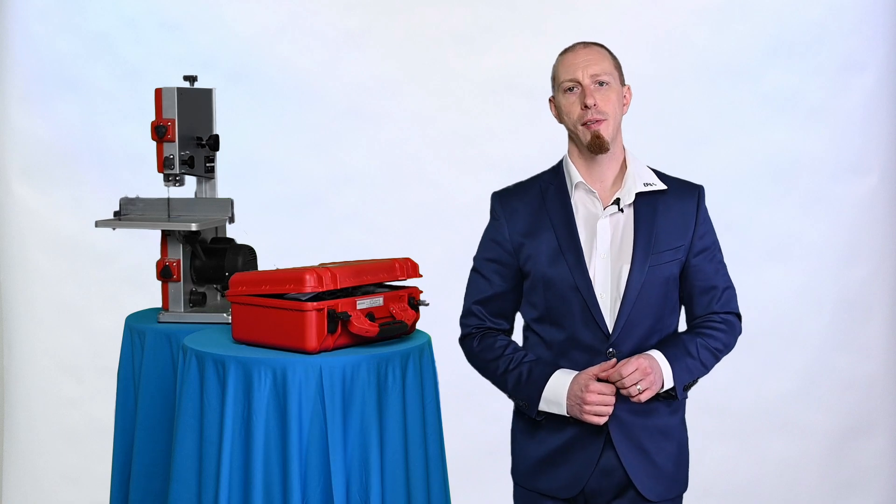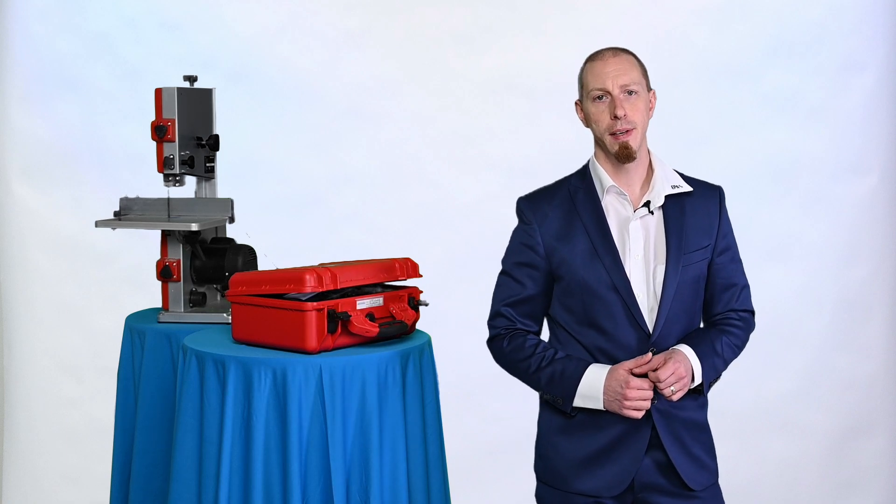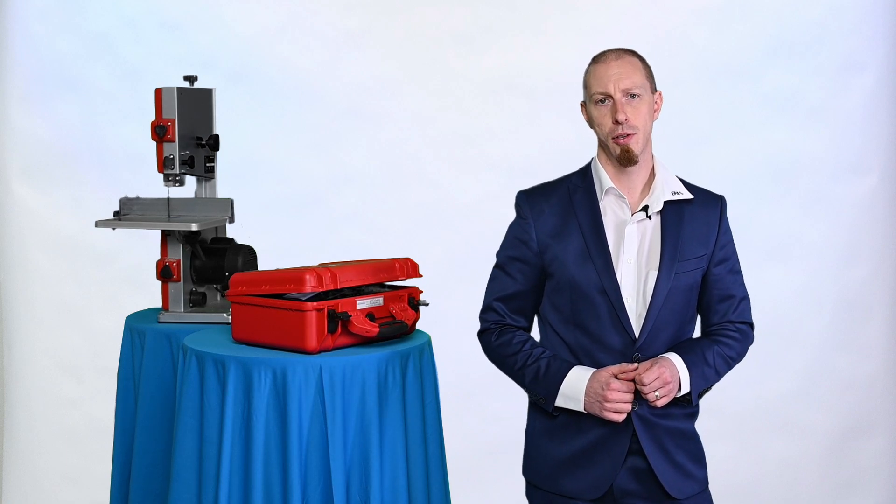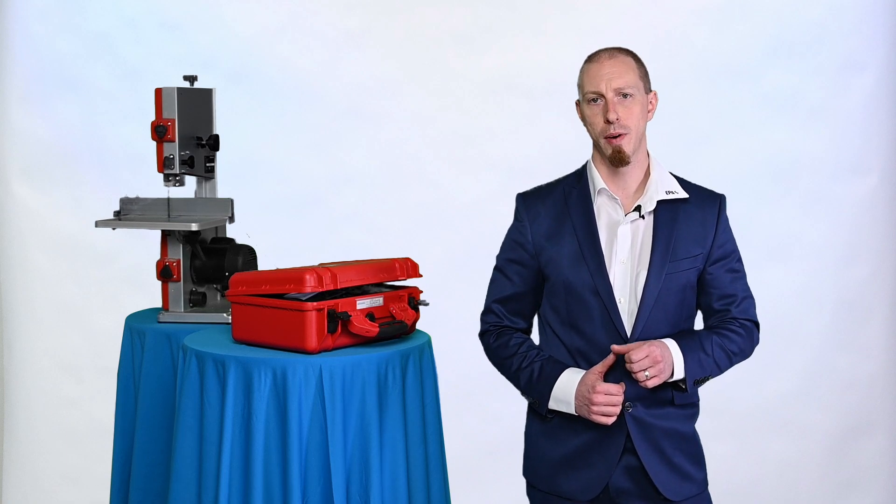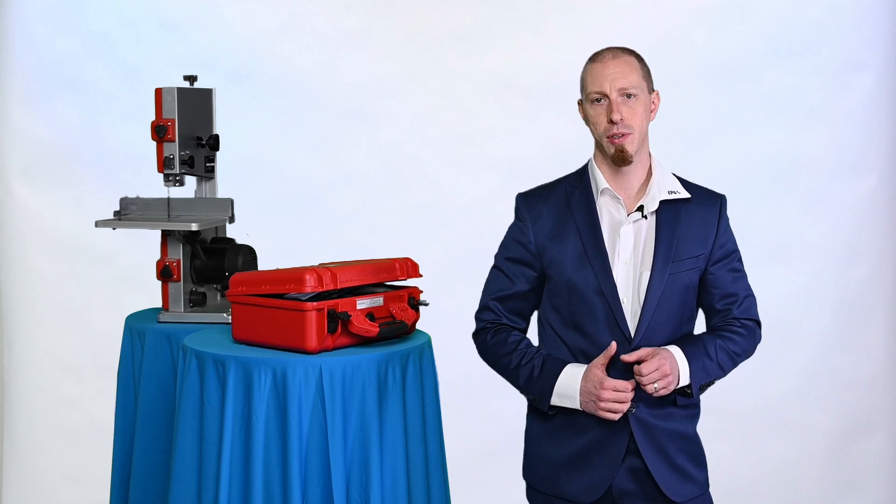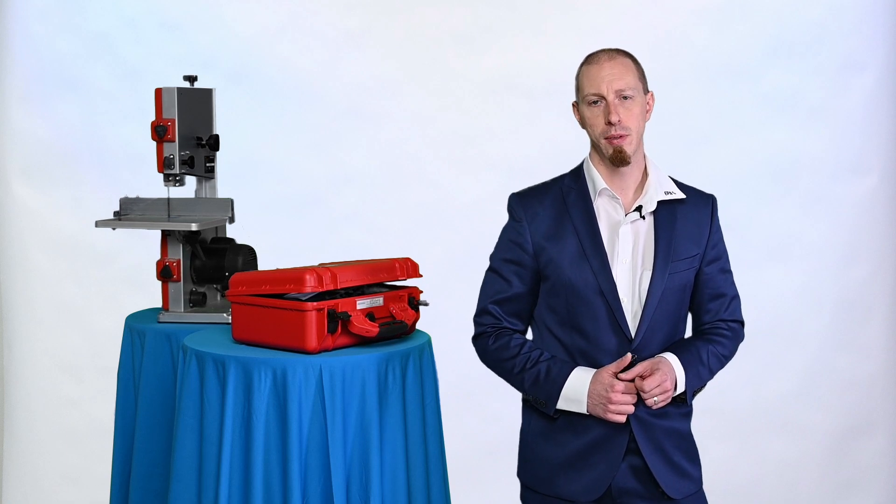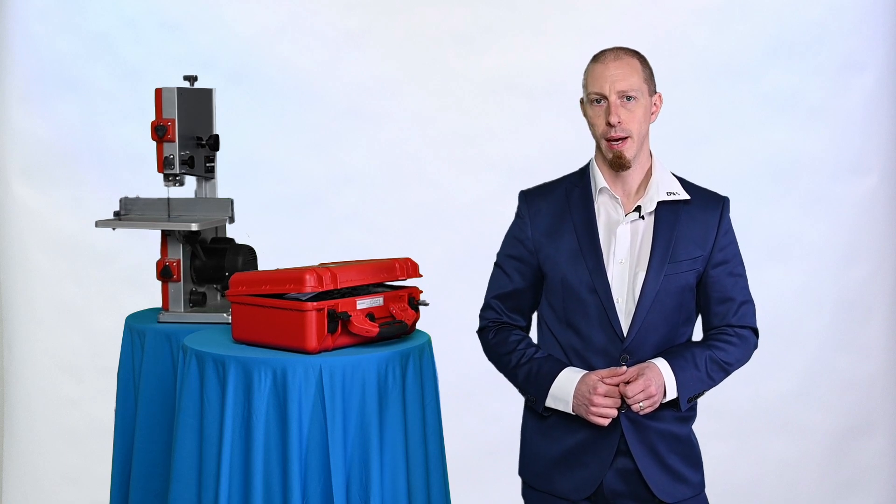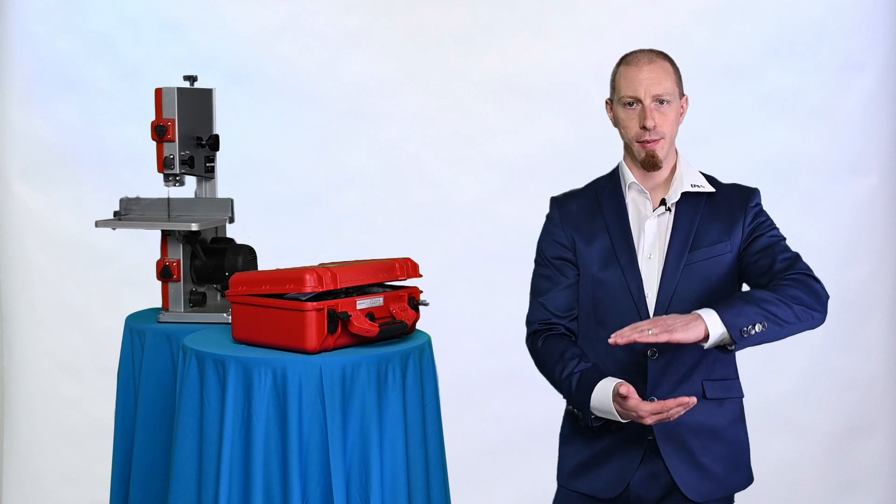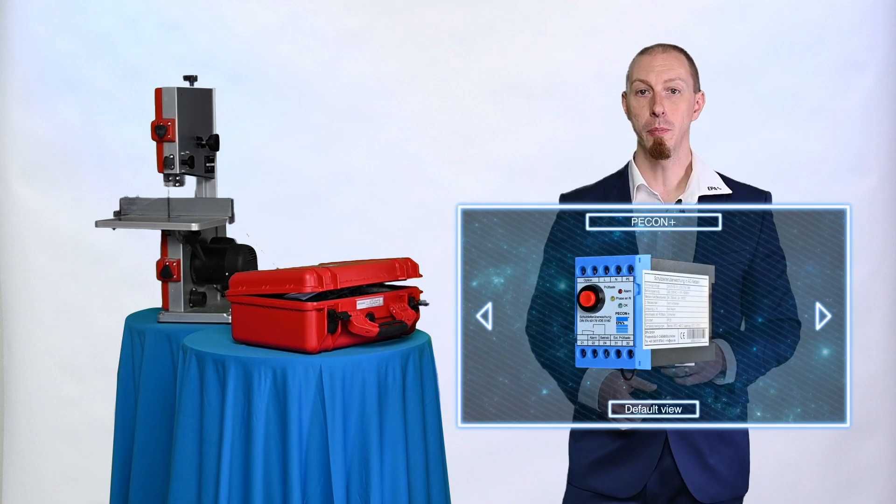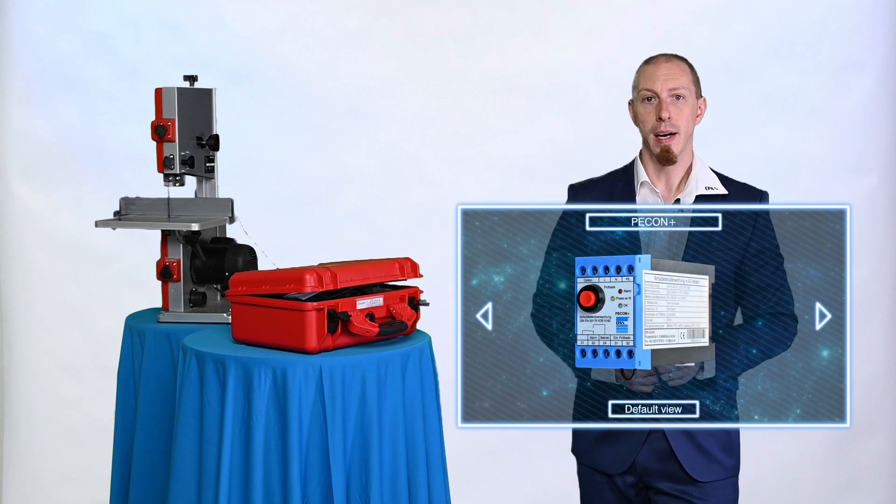We have asked ourselves this very question and have developed a device that not only detects the presence of the protective earth conductor but also it's permanently monitored. Via a potential free contact it is able to switch off the system. The pecan plus combines all these functions in one device and offers even more advantages.